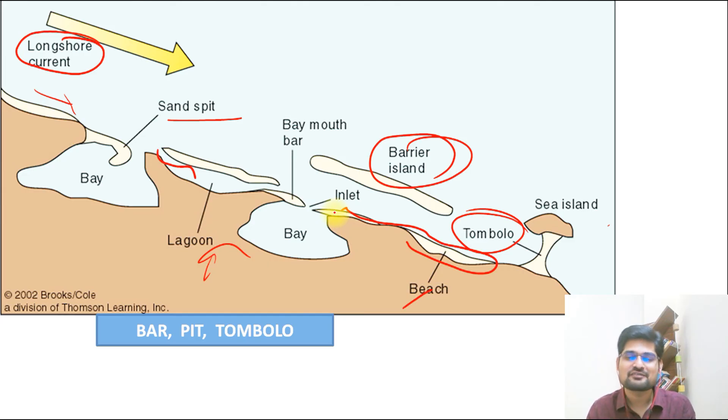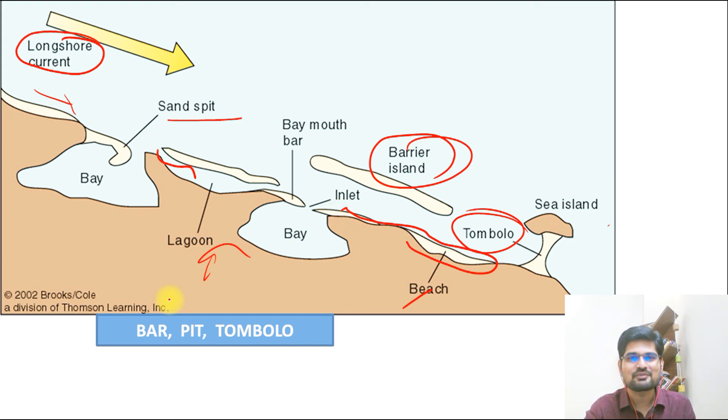If you ever go to the seaside, you can observe these features for yourself. These depositional landforms hold very high importance in coastal geomorphology. Now that we have covered various aspects of coastal landforms — processes and features — you have completed the entire series from fluvial to glacial to aeolian to karst and today's coastal landforms. If you have not watched the previous sessions, do visit the geomorphology or physical geography playlist on the channel. This is important for UPSC exams or university geography exams.